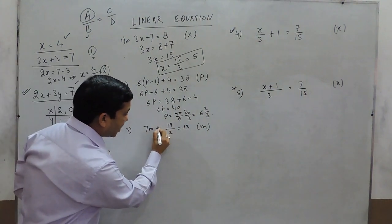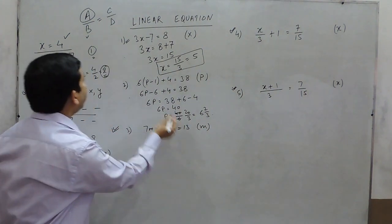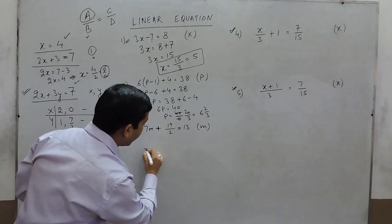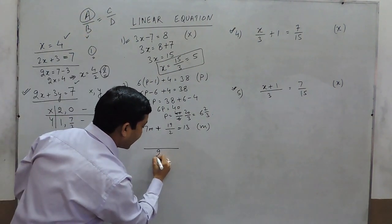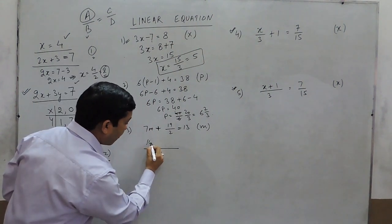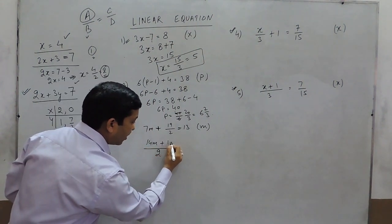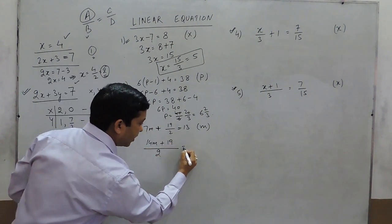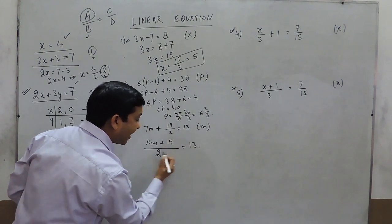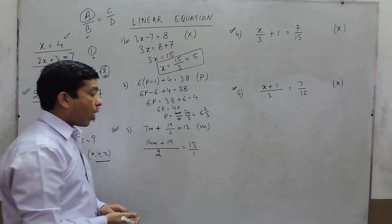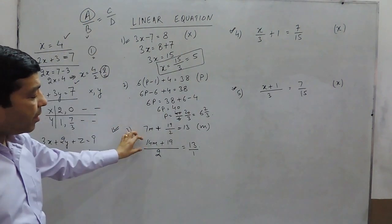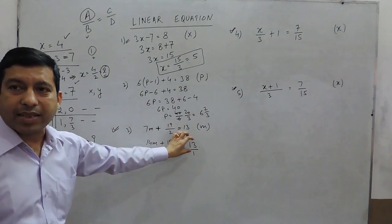If there is a positive sign in between terms, it is not directly in the format of a upon b equals c upon d. What we can do is take the LCM as 2, so it becomes: the numerator is 14m plus 19, and this equals 13. Now 13 can be written as 13 upon 1.